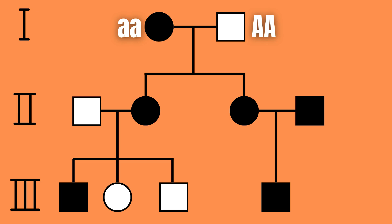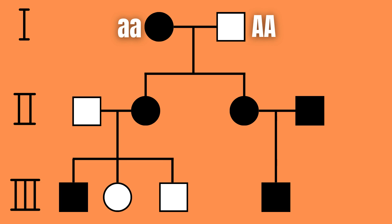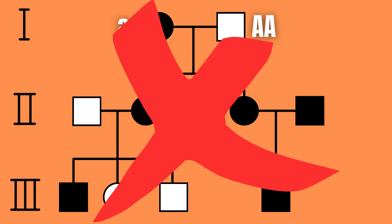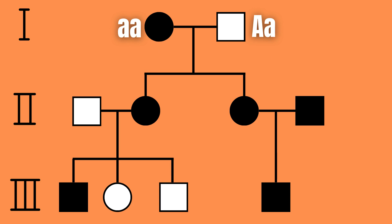Let's start by assuming that the other parent is homozygous dominant. We quickly notice that this would mean that all the children are heterozygous dominant and would therefore not express the recessive trait as they do in this case. But what about if the parent was instead heterozygous dominant?